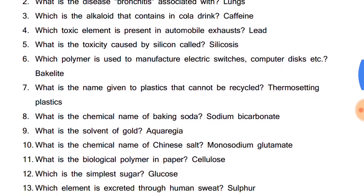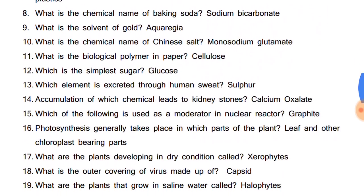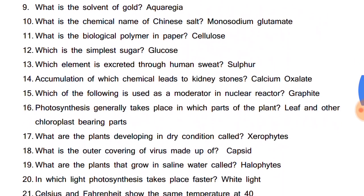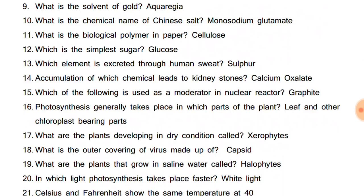What is the solvent of gold called? Aqua Regia. Aqua Regia is a mixture of nitric acid and hydrochloric acid in the ratio of 1 to 3. What is the chemical name of Chinese salt? Monosodium glutamate.